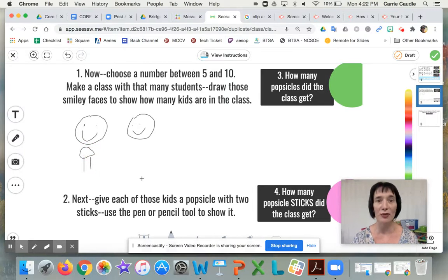The most important thing is that you show that each of the people has two sticks. Isn't that funny? It almost looks like a little person there, so that's the popsicle. So remember, you have to have at least five kids and up to ten kids, but no more. And then you're going to answer the question when you're done: how many popsicles did this class get? And then of course, how many popsicle sticks did they get, remembering that each popsicle has two sticks.